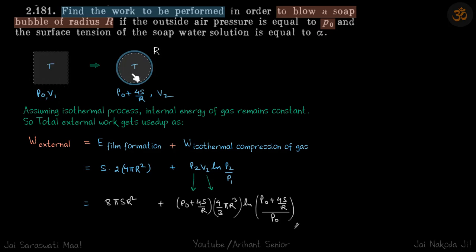So when we need to find the work performed, whatever work we are performing, part of that work is used to compress this gas and some more work is needed to create the surface of this soap bubble. So now we can write that total work external is equal to energy needed to form the film plus work done in isothermal compression of gas.